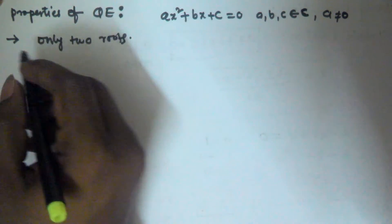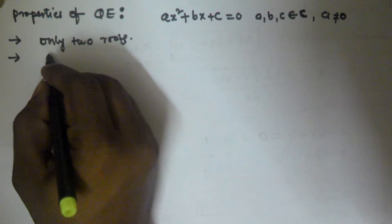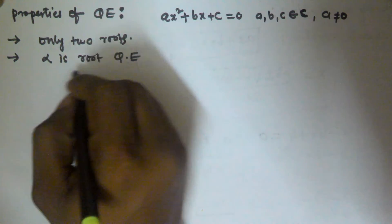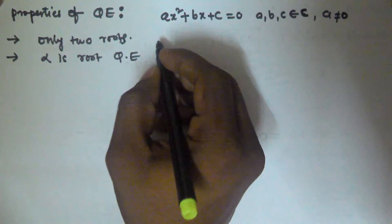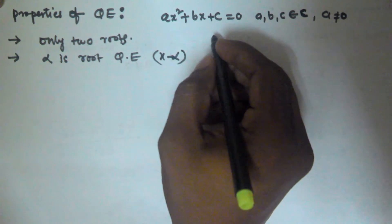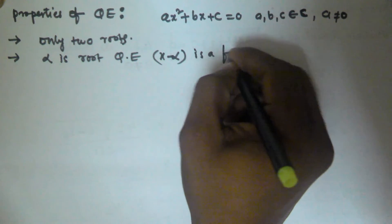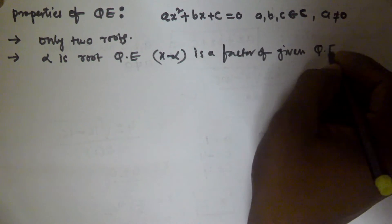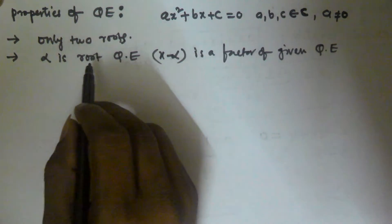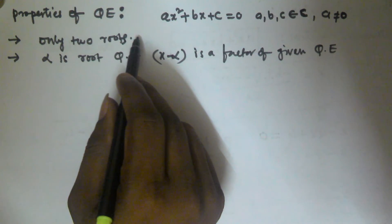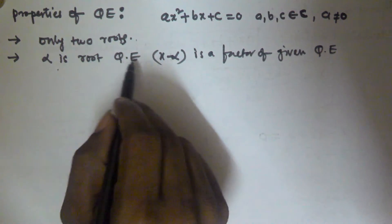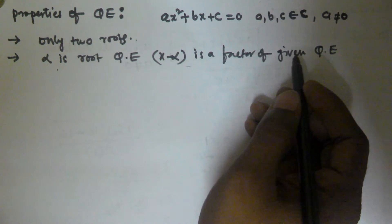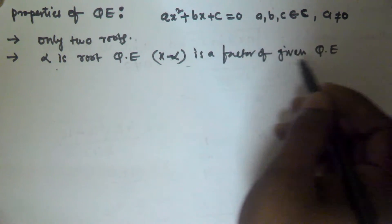The next property is: if alpha is a root of the quadratic equation, then (x minus alpha) is a factor of the given quadratic equation. That means by multiplying something with (x minus alpha), we can generate the quadratic equation.